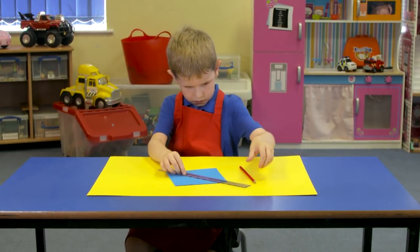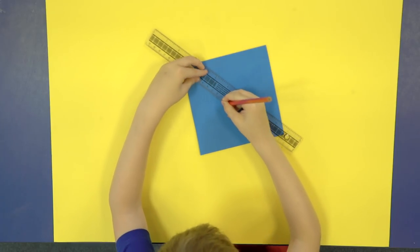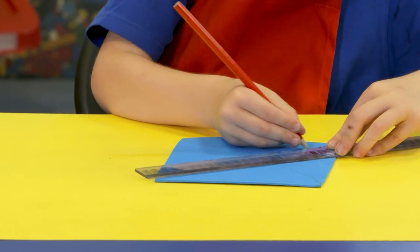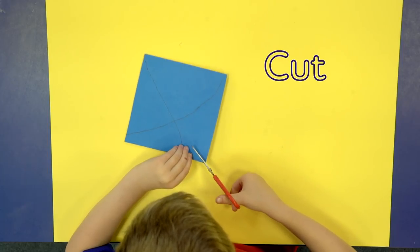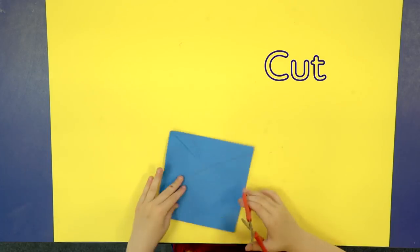Take a square of foam and draw lines from corner to corner. Cut down the lines towards the middle, but not all the way across.